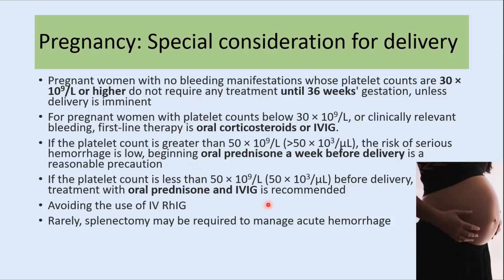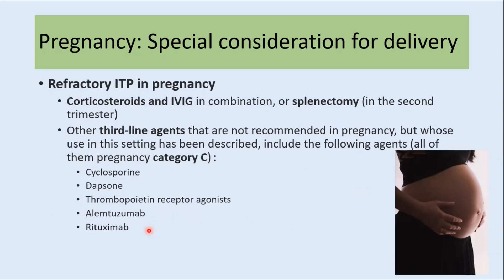In pregnancy, it is better to avoid RH immunoglobulin. Splenectomy may be required in some patients to manage acute hemorrhage. To manage refractory ITP in pregnancy, corticosteroids can be combined with IVIG, or a patient can undergo splenectomy in the second trimester. Third-line agents like immunomodulators are not recommended in pregnancy but have been used in certain situations with caution.